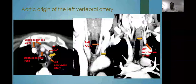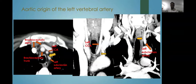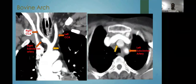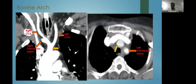The first case is the aortic origin of the left vertebral artery, shown marked in yellow, arising from between the left common carotid artery and the left subclavian artery. The second case is that of bovine arch, in which we see a common origin of the brachiocephalic trunk and the left common carotid artery.